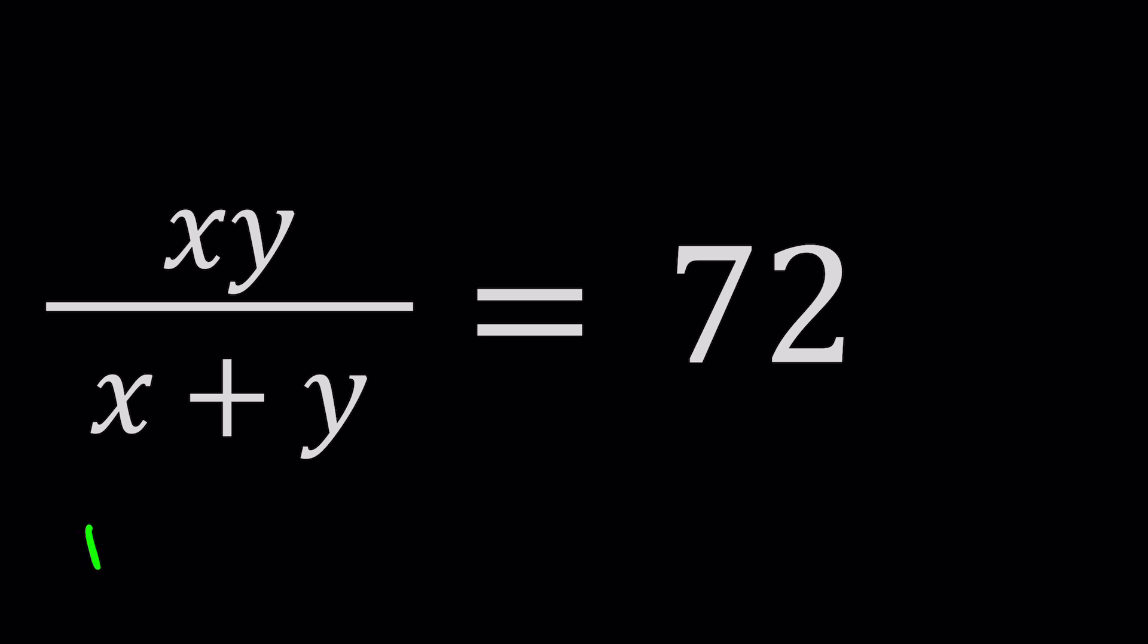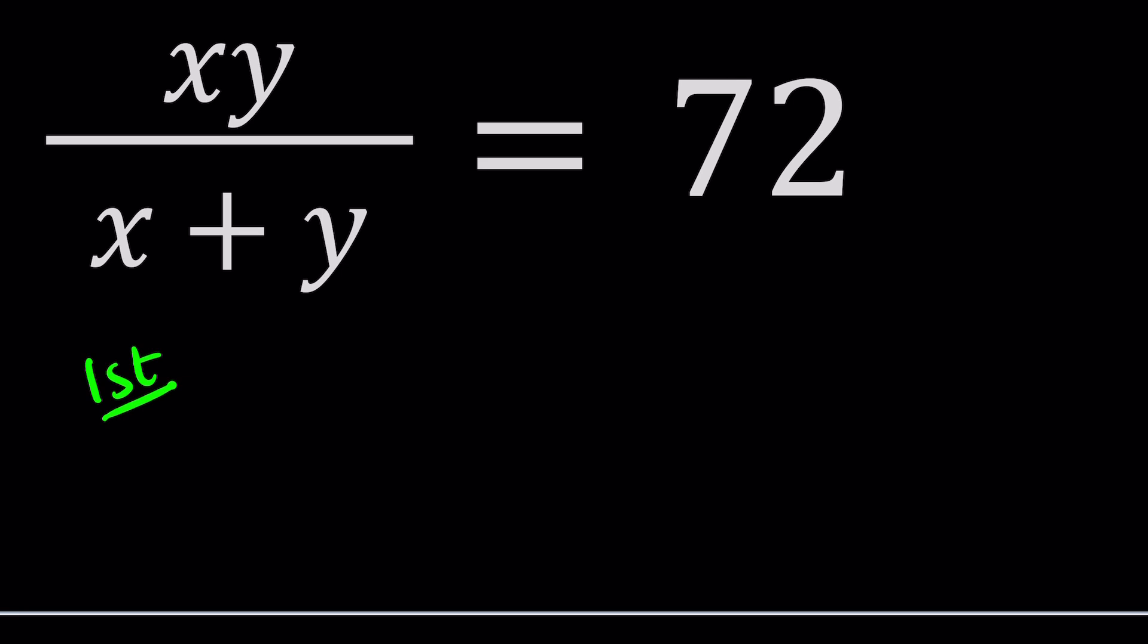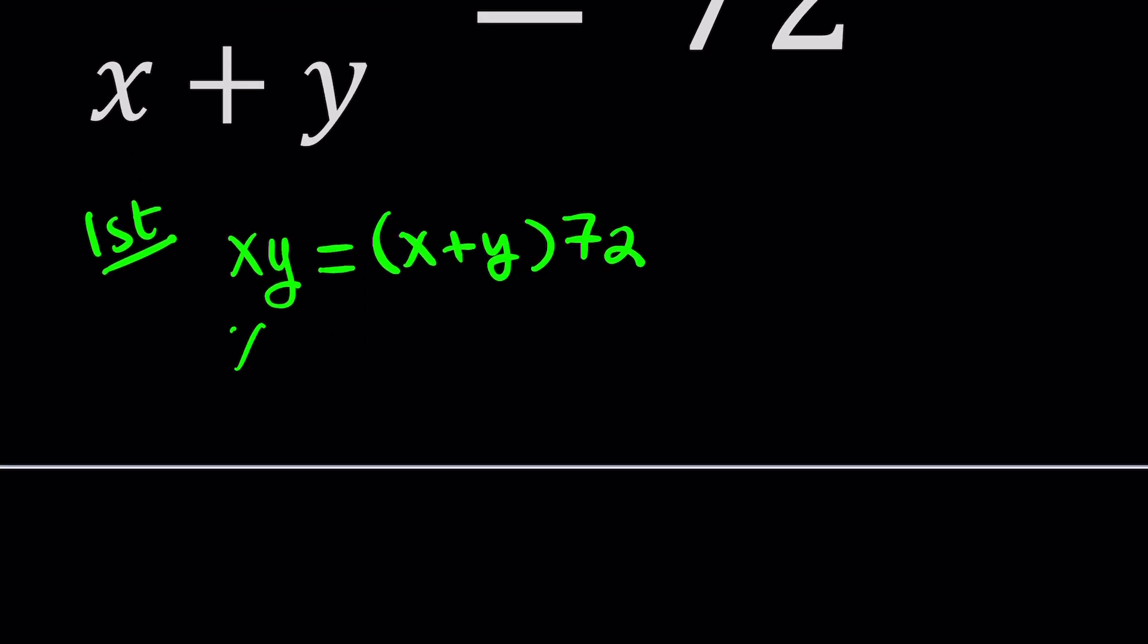First method, I want to go ahead and cross multiply. If you do that, you're going to get something like xy equals x plus y times 72, which is something you can distribute, and that will give us xy equals 72x plus 72y.